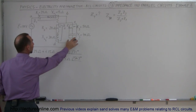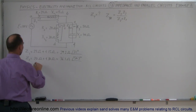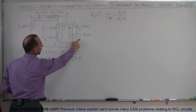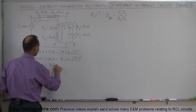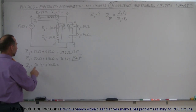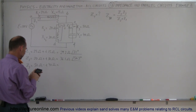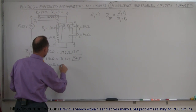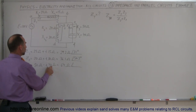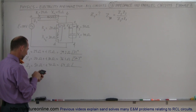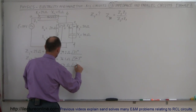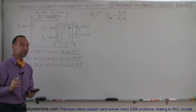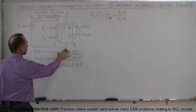The impedance of the branch with a capacitor is Z3, equal to the real part 50 ohms plus the imaginary part. Since it's the reactance of a capacitor, the phase angle is 90 degrees behind, so it becomes 50 minus j40 ohms. In magnitude form: square root of 50 squared plus 40 squared equals square root of 4100, which gives 64 ohms. The phase angle is arc tangent of 40 divided by 50, giving 38.7 degrees — but negative because it's a capacitor, so minus 38.7 degrees.